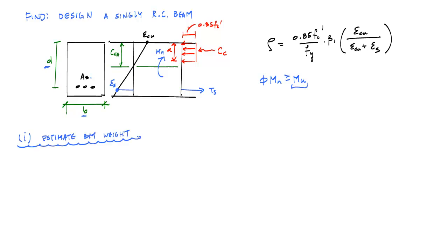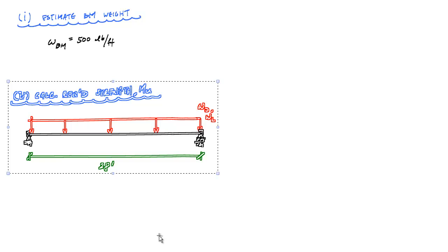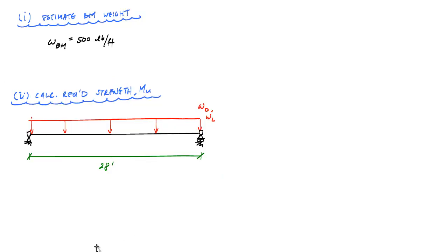What I want to do is design a singular reinforced concrete beam: select and place the steel, define the depth and width of the beam, so that the design moment strength is greater than or equal to the ultimate moment applied. The first thing we want to do is estimate the beam weight and calculate the required moment strength, MU. Estimating beam weight is more of an art, so if you've never done it before, you might as well just guess a number.